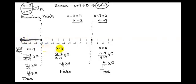I have a test point in between negative 7 and 2 — I picked x equals 0. I plug that into my original inequality and I get is negative 2 sevenths greater than or equal to 0? No, a negative number is not bigger than or equal to 0. It's false. I do not want this region.